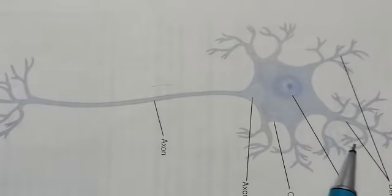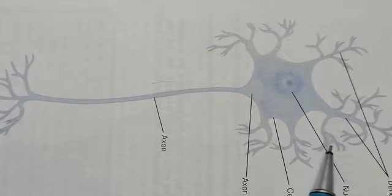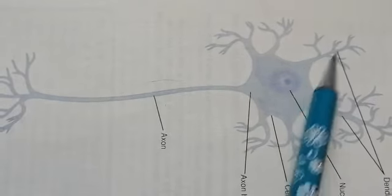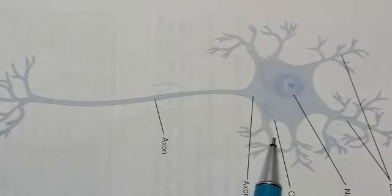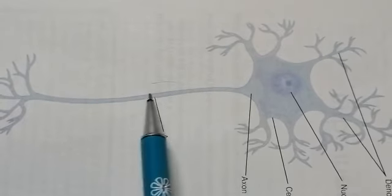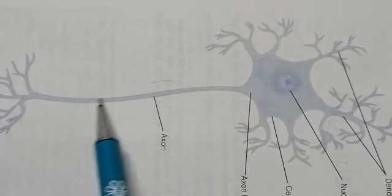These dendrites branch and branch and they taper off in their diameter and they form a star-like structure. These are the dendrites and one large process going down from the cell body of the neuron is the axon.